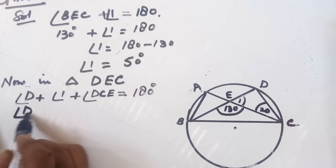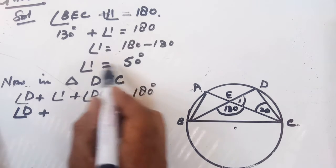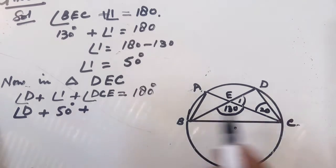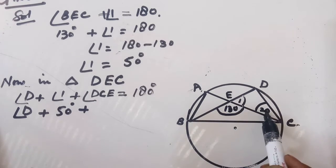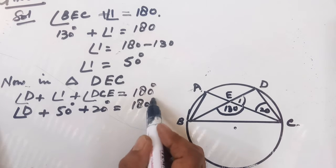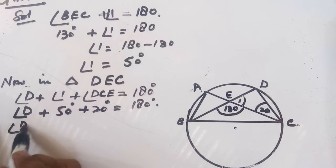Angle 1 is 50 degrees, and angle DCE is already given as 20 degrees.